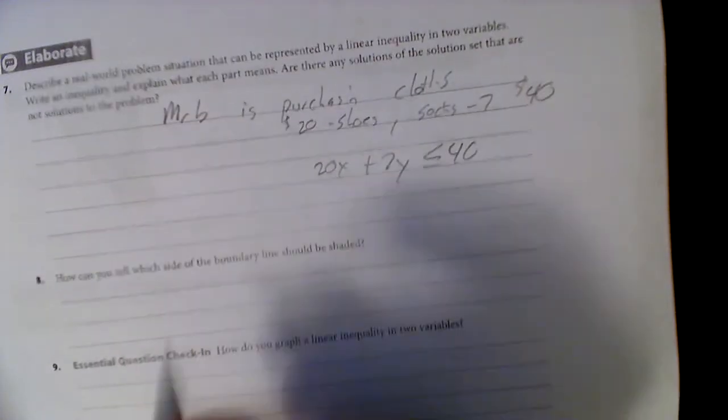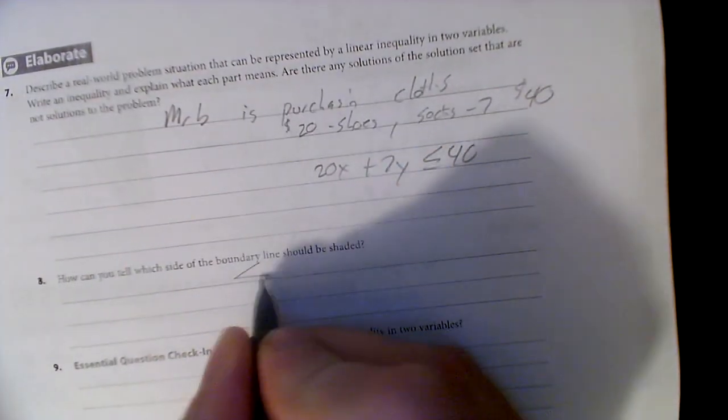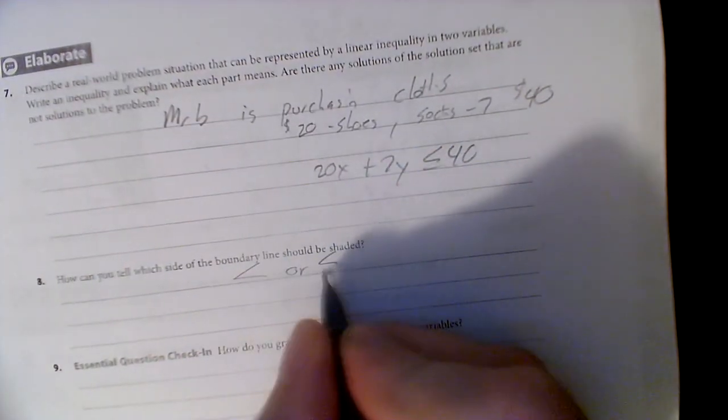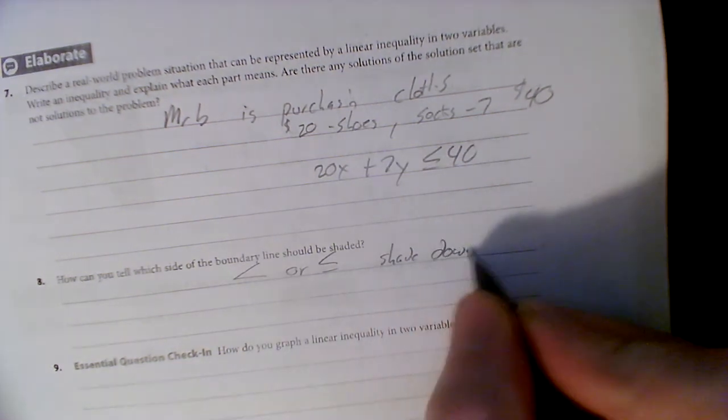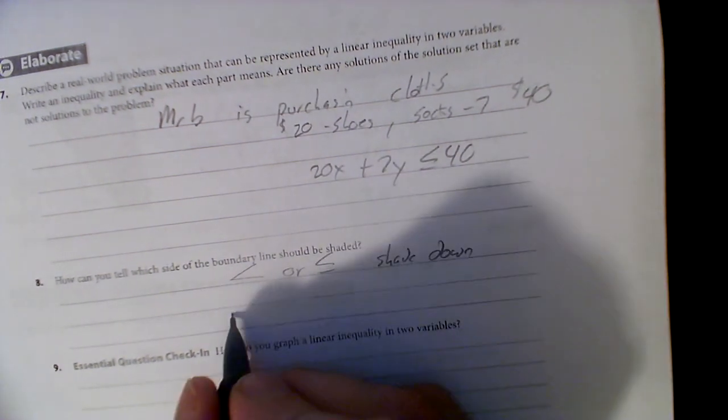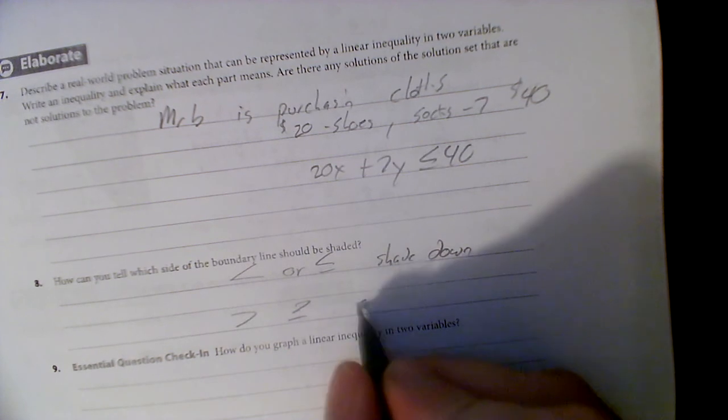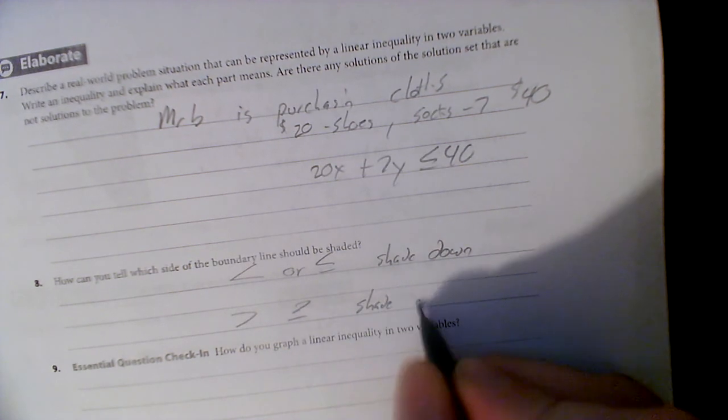How can I tell which side of the boundary line should be shaded? If it's less than or less than or equal to, we shade down. If it's greater than or greater than or equal to, we shade up.